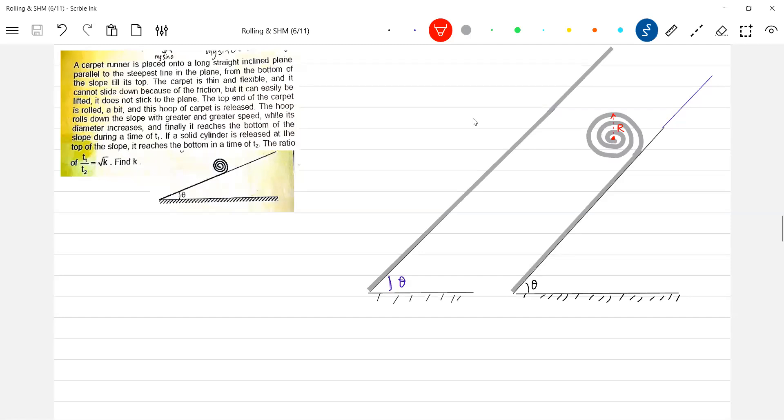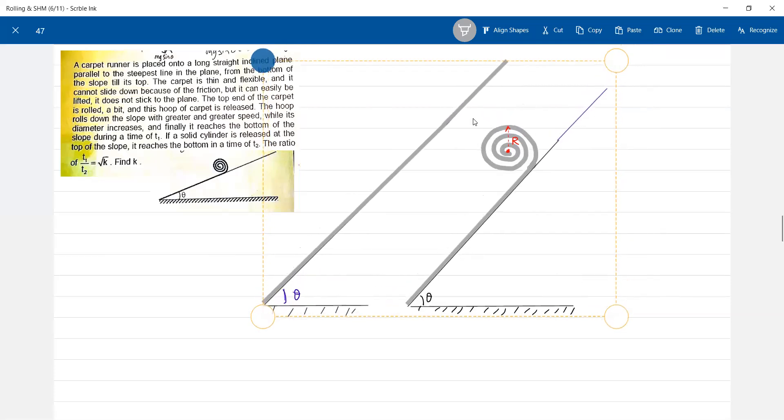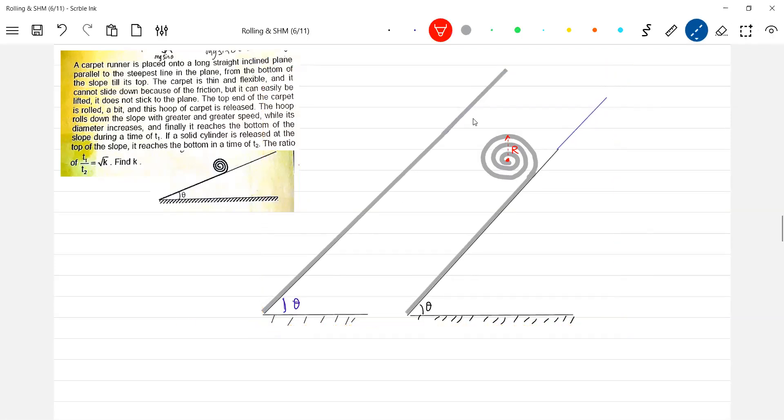By the time it finally reaches the bottom, somebody is asking what happens finally. I think I'll take one more diagram. Some of them are asking, sir, finally what will happen? Finally what happened, the carpet will be here, no? Increasing radius.